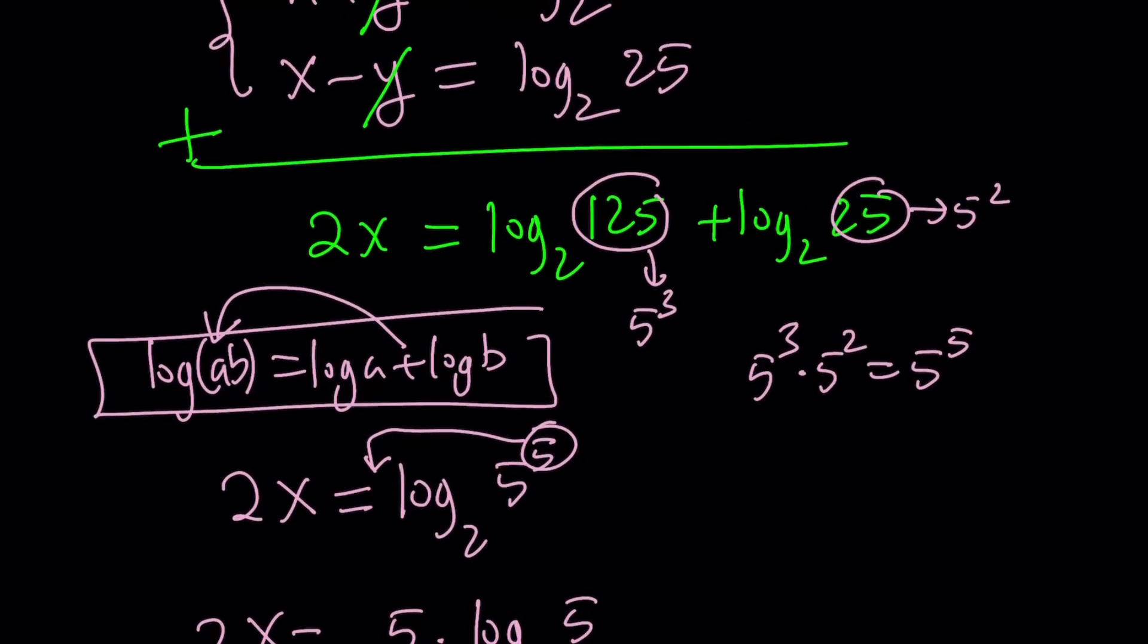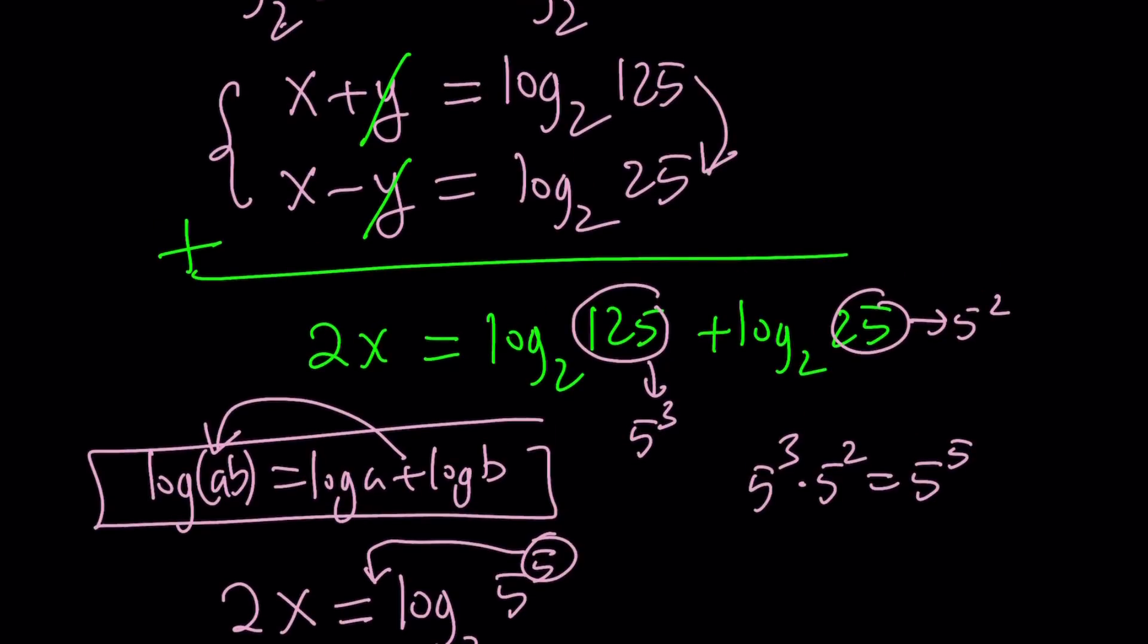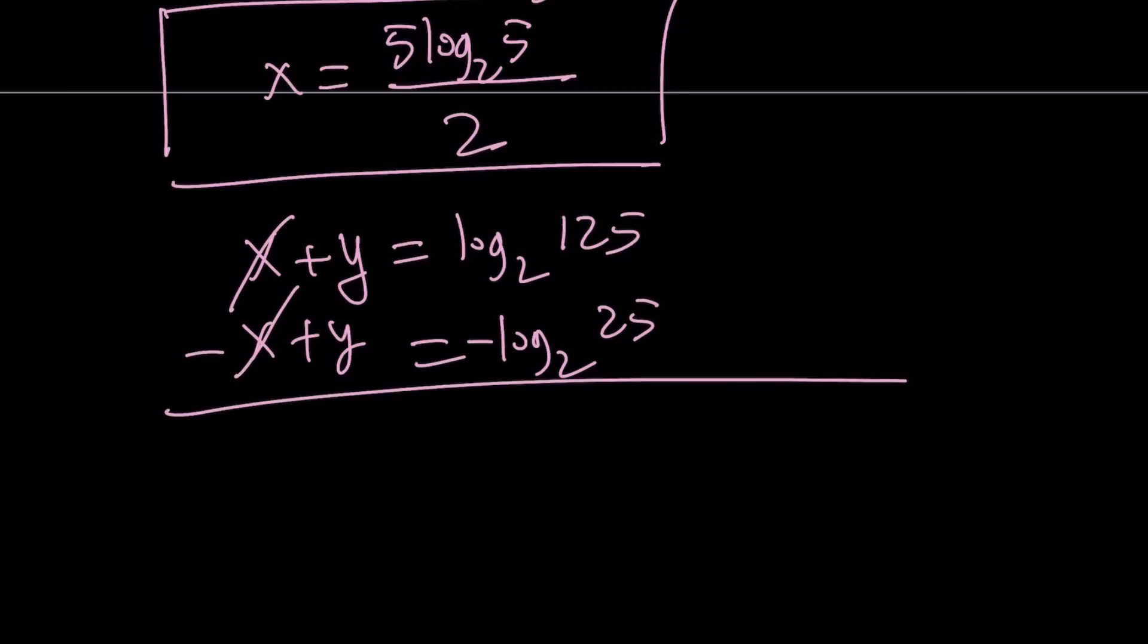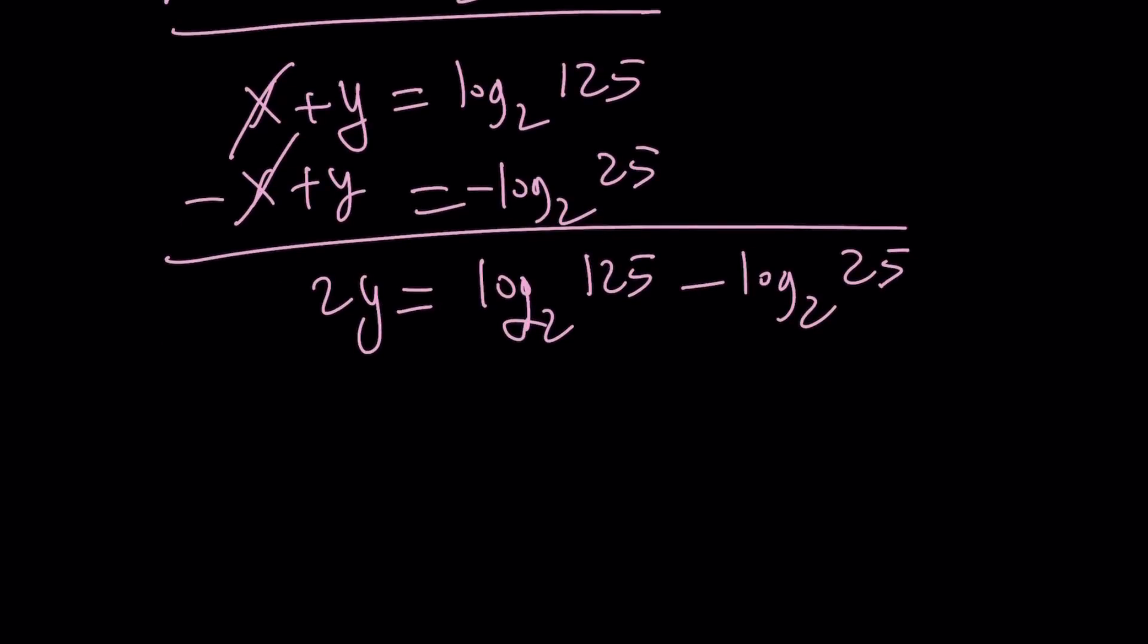That is my x value, and I can find the y value by substitution, but I would subtract the equations, because if you subtract, x is going to cancel out. Let's rewrite our expression. I had x plus y and x minus y. You're kind of negating the second equation and adding. That's equivalent to subtracting. This gives you 2y equals log 125 minus log 25.